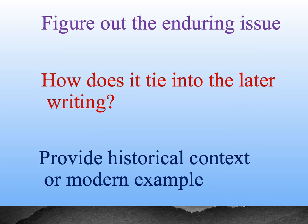Our three main tasks on the social studies response are: first, we have to figure out what this Enduring Issue is saying — this thing that was written maybe 200 years ago, what exactly does it say? Then we've got to tie it into the later speech or quotation that's given and see if it's really saying the same thing or something different. And then finally, we have to be able to provide some historical context — what was going on in history during that time — or provide some modern day example of that right. This is not as hard as it sounds, and I'll provide you with some tips on how to do this.